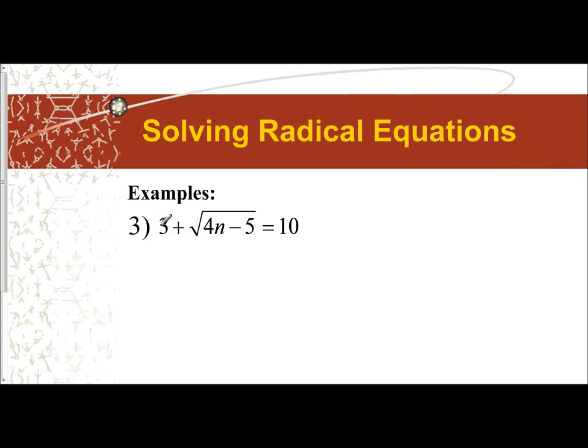If I take a look, that means I'm going to have to get rid of this positive 3. So I'm going to subtract 3 from both sides. That's going to give me the square root of 4n minus 5 equals 7.